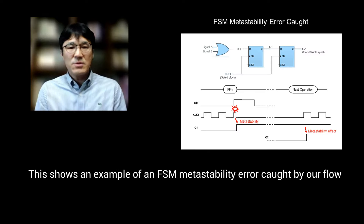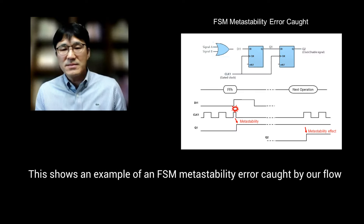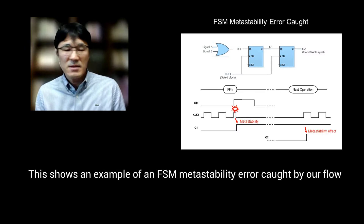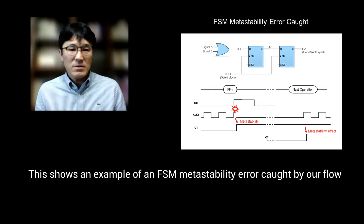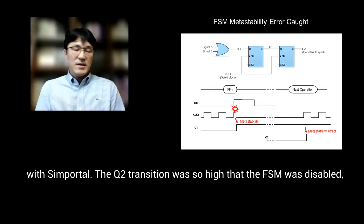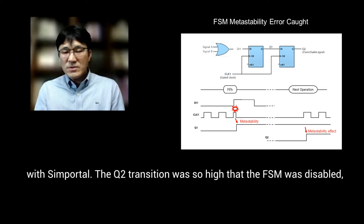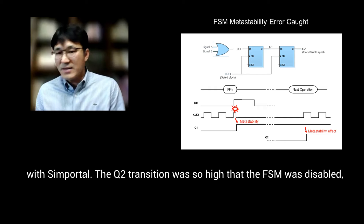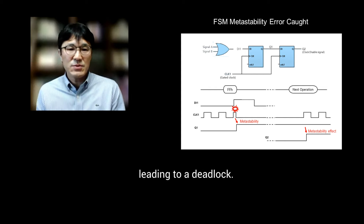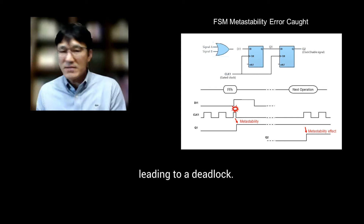This shows an example of FSM metastability errors caught by our flow with SimPora. The Q2 transition glitch rate was so high that the FSM was disabled, leading to a data loss.